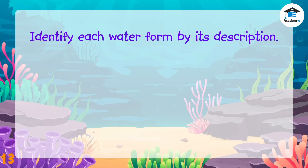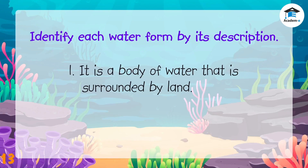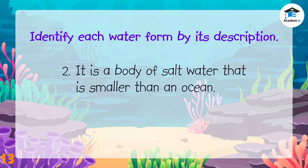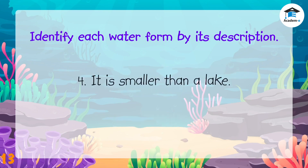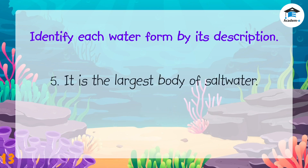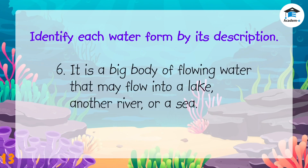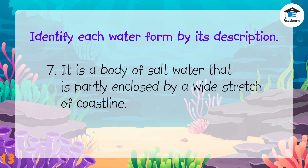Identify each waterform by its description. It is a body of water that is surrounded by land — the answer is lake. It is a body of saltwater that is smaller than an ocean — the answer is sea. It is a body of water falling from a high place — the answer is waterfall. It is smaller than a lake — the answer is pond. It is the largest body of saltwater — the answer is ocean. It is a big body of flowing water that may flow into a lake, another river, or a sea — the answer is river.